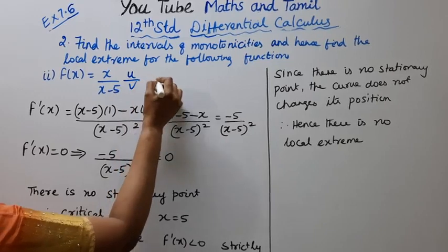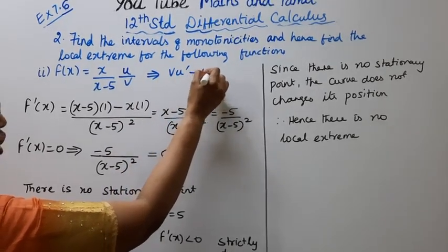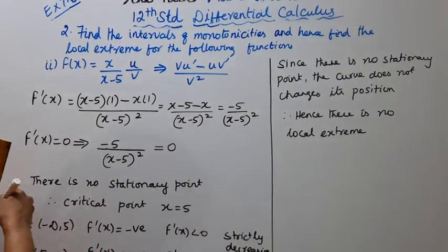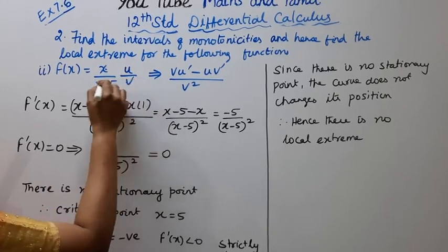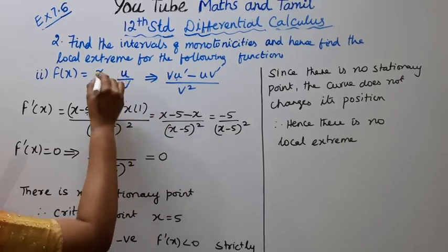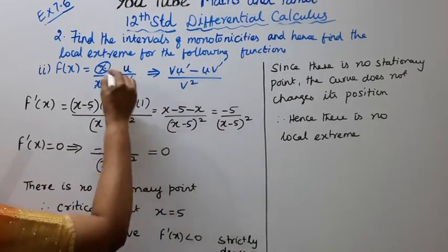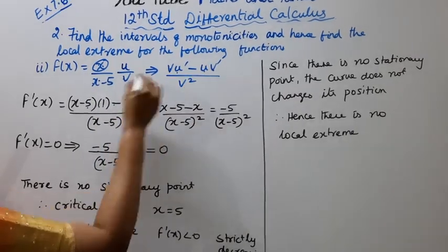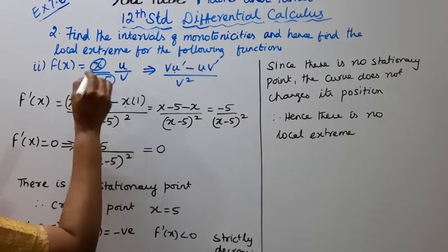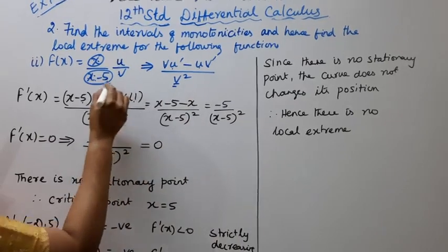We use the u by v quotient rule formula: differentiate as v times u dash minus u times v dash, all divided by v squared. Here u is x and v is x minus 5. u dash, differentiating x with respect to x, gives 1. v dash, differentiating x minus 5 with respect to x, gives 1. So f dash of x equals x minus 5 times 1 minus x times 1, all divided by x minus 5 squared.